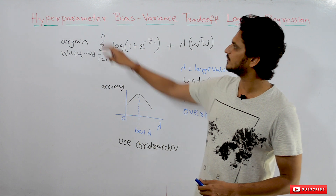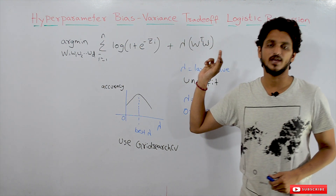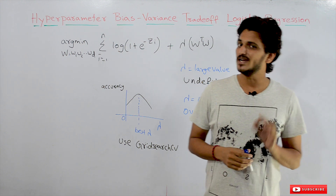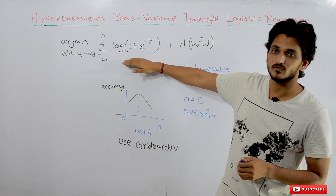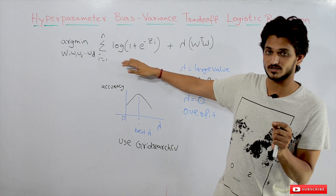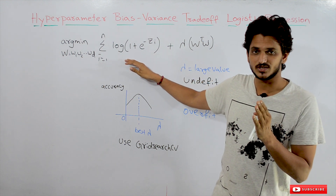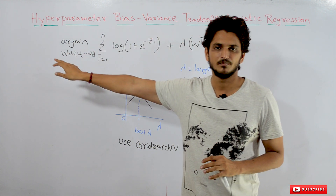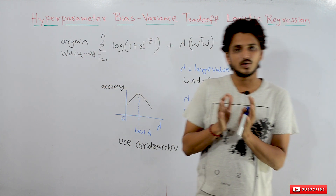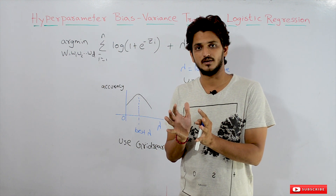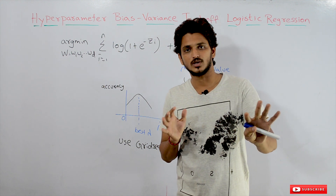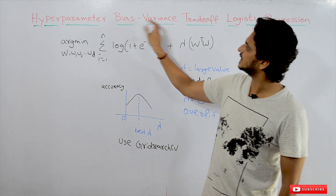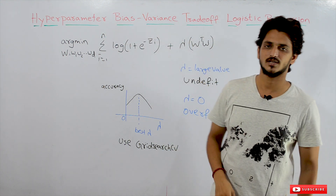Welcome to Learning Monkey, I am Raghu. In this class we will discuss hyperparameter bias-variance trade-off in logistic regression. In previous classes we clearly discussed the optimization problem of logistic regression — the loss function, the regularization term — all those topics were clearly discussed. Please watch those videos and come back here.